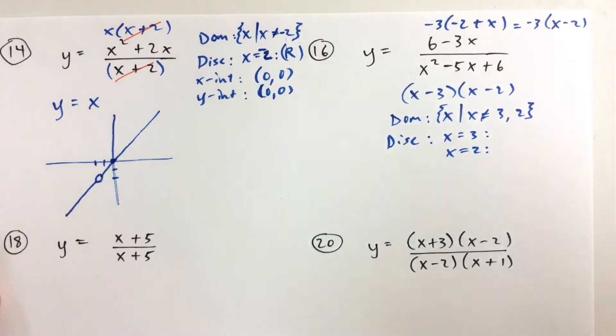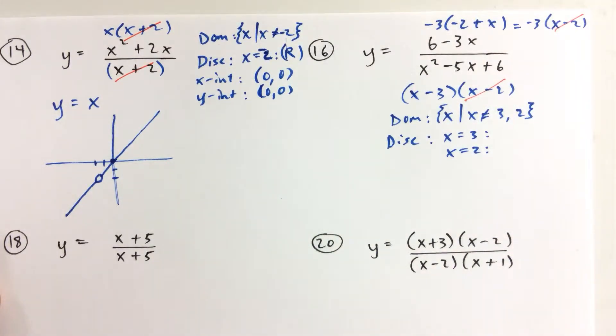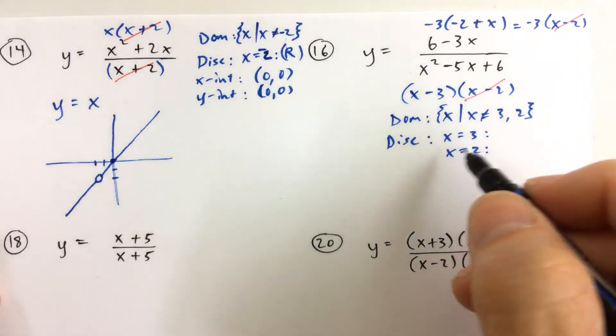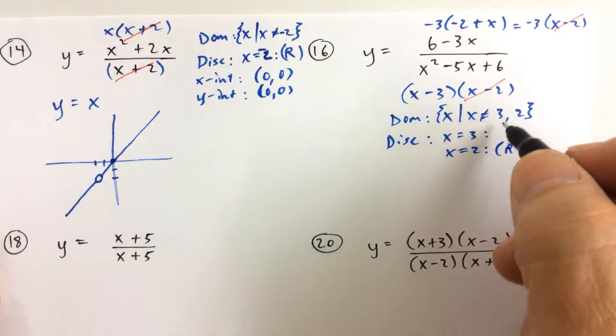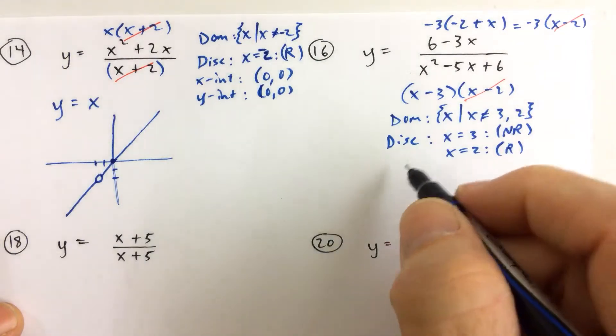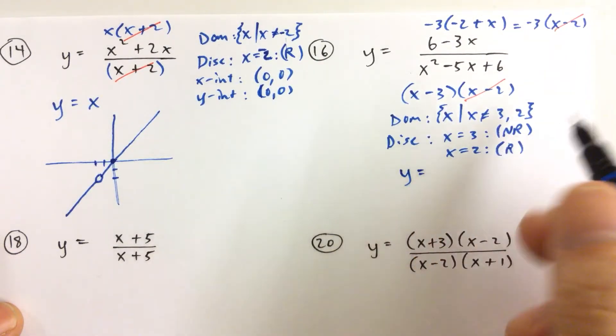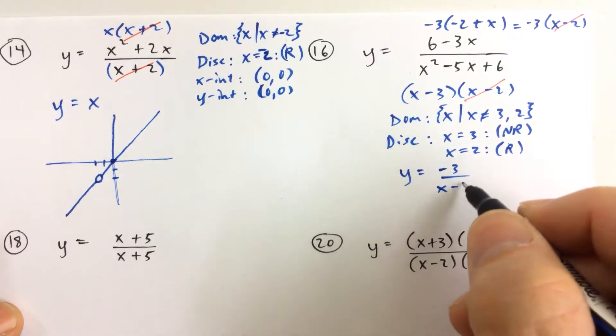But notice that we're going to be canceling that factor of x minus 2, and if we cancel the factor of x minus 2, the discontinuity of x equals 2, we call it a removable discontinuity, and then the discontinuity of x equals 3 is a non-removable discontinuity. And we have our reduced version. So what are we left with in the numerator? Negative 3. In the denominator, we're left with x minus 3.